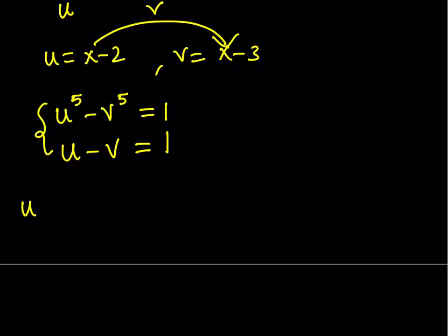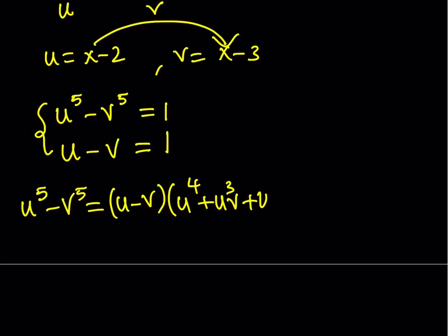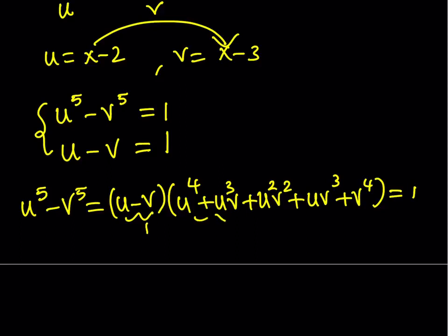So u to the fifth minus v to the fifth can be written as u minus v, multiplied by u to the fourth plus u cubed v plus u squared v squared plus u times v to the third plus v to the fourth. You can always factor the difference of powers, and even if you have a sum, you can factor it as long as the power is odd. We know that u minus v equals 1 and the whole expression equals 1, so the second factor also equals 1.